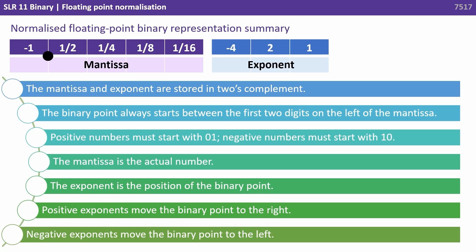So let's recap. With normalised floating point binary representation: the mantissa and exponent are stored in 2's complement; the binary point always starts between the first two digits on the left of the mantissa; positive numbers must start 01, negative numbers must start 10; the mantissa holds the actual number or value; the exponent is the position of the binary point; positive exponents move the binary point to the right, and negative exponents move the binary point to the left.